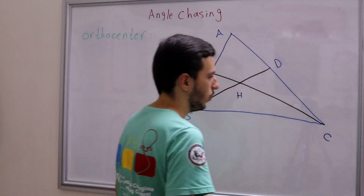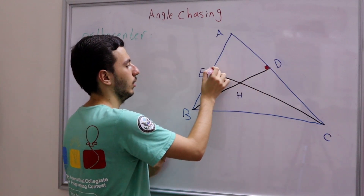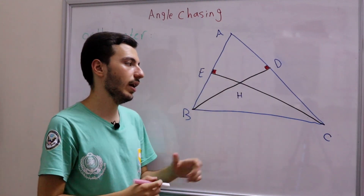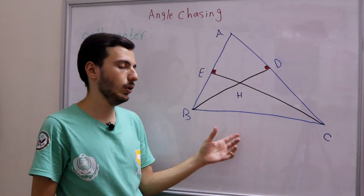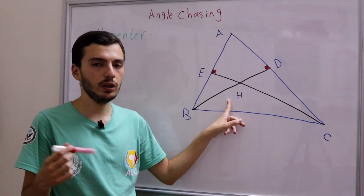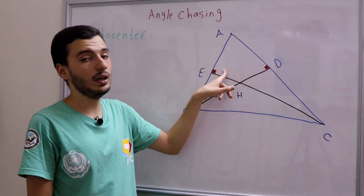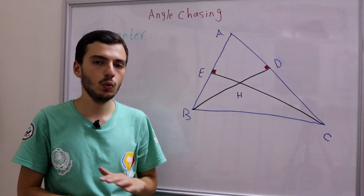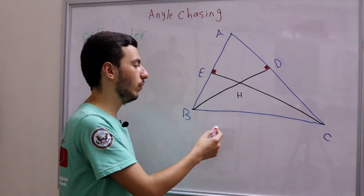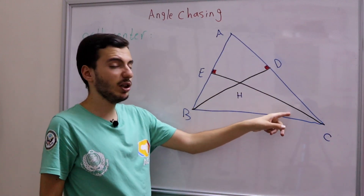These two angles are right angles because they come from altitudes. The orthocenter — which we denote with the capital letter H — fits really well with angle chasing. We immediately have two right angles, which means we can find all the angles related to the orthocenter at once. So first, we aim to find angle BHC.